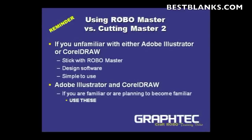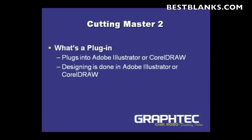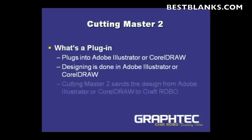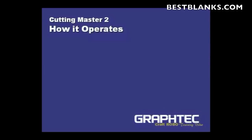That being said, if you are familiar or are planning to become familiar with these programs, then obviously use them with your Cutting Master 2 plug-in. A plug-in is just that — it plugs into Adobe Illustrator or CorelDRAW. All the designing is done in Illustrator or CorelDRAW as you would normally, and Cutting Master 2 is a plug-in that actually allows you to send the design from those programs to the Craft Robo with ease of use and simplicity.